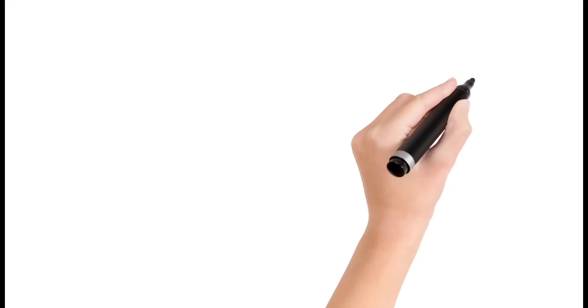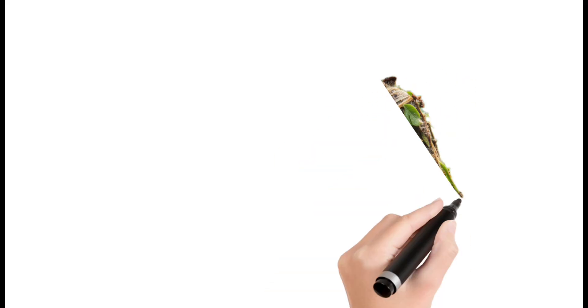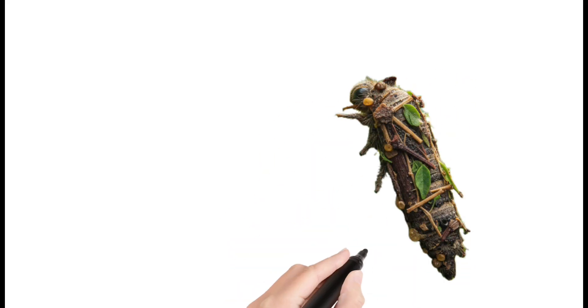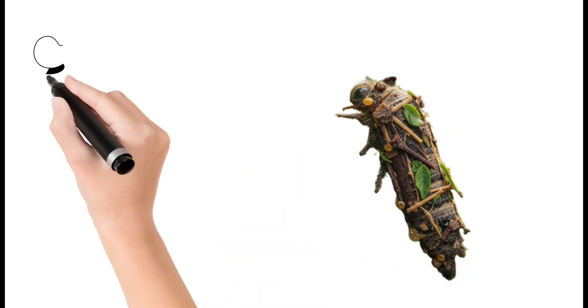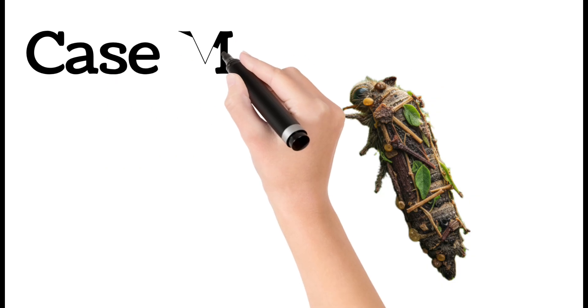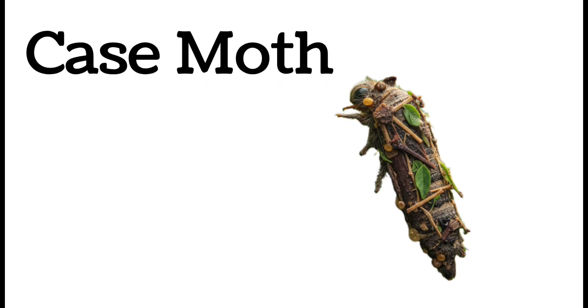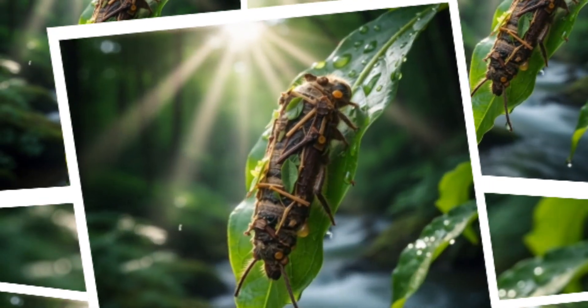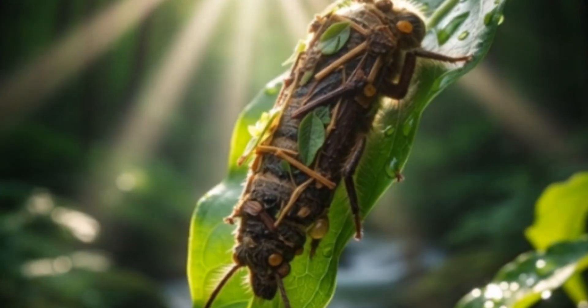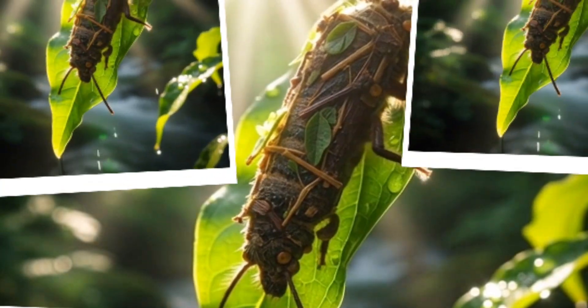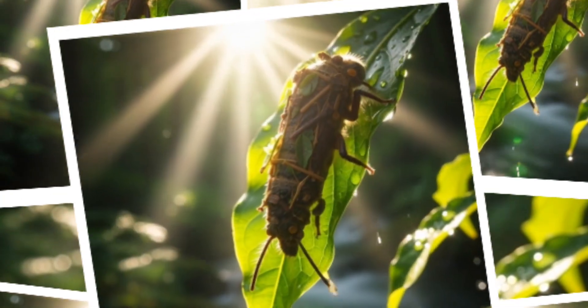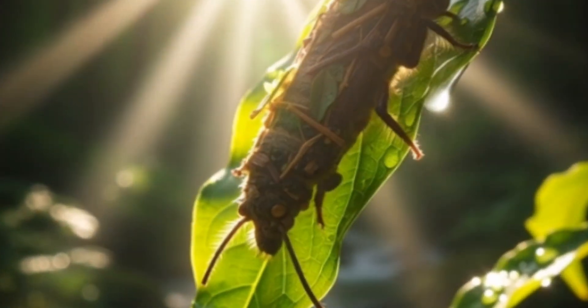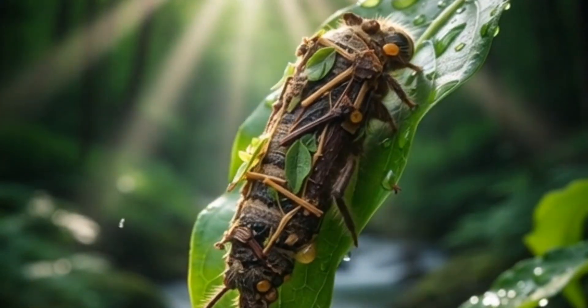Next, case moth: larva builds protective bags. These bags hang from branches. Adult moths are small and brown. Feed on leaves of trees. Common in gardens.